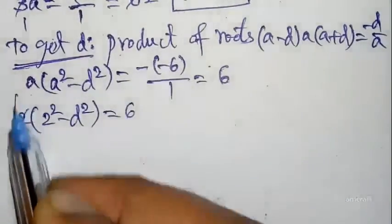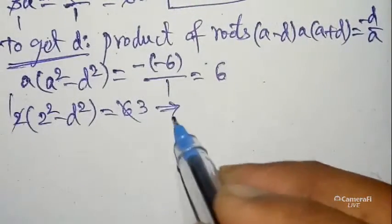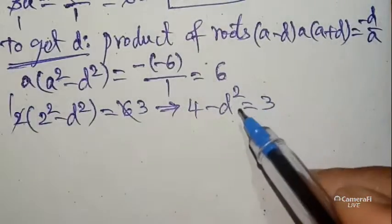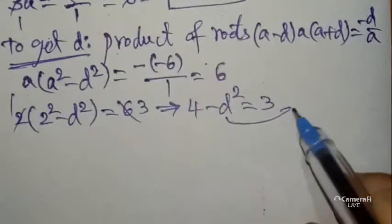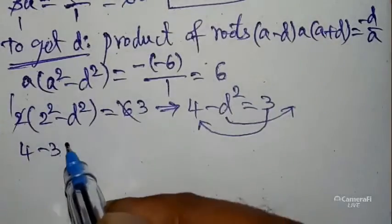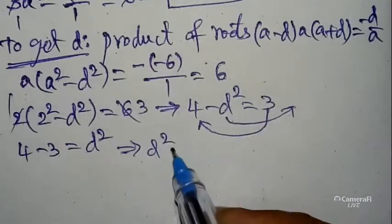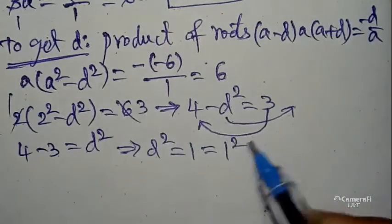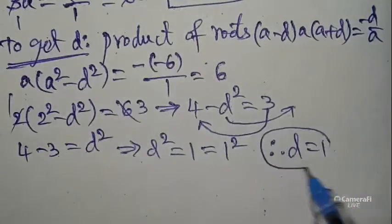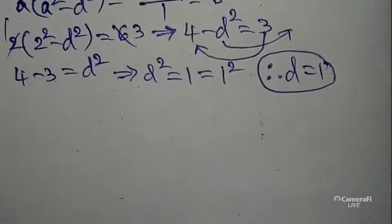Substituting a equals 2: 2 times (2² minus d²) equals 6. Simplifying: 2 times (4 minus d²) equals 6, so 4 minus d² equals 3. Bringing terms across: d² equals 4 minus 3 equals 1. So d² equals 1² equals 1, therefore d equals 1.